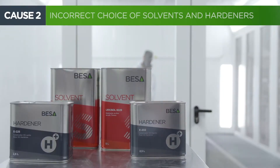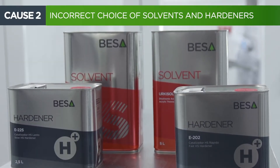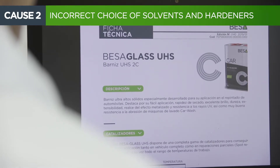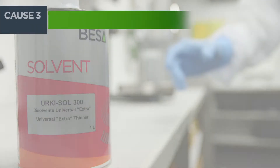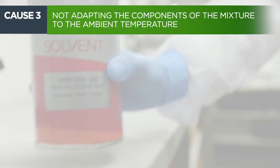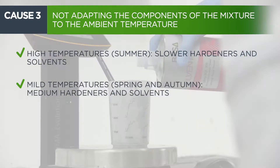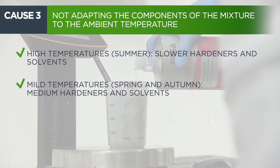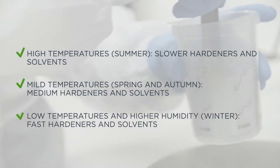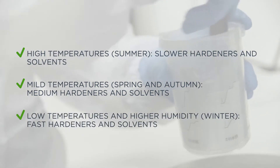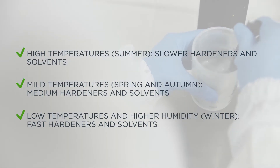We must choose the solvent and hardener to be used according to the technical data sheet and the ambient temperature when preparing the mixture. In higher temperatures we will use slower hardeners and solvents. With milder temperatures we will use medium hardeners and solvents. For low temperatures with high humidity we will use fast hardeners and solvents.